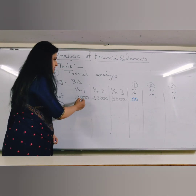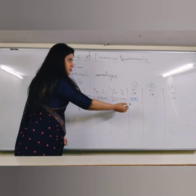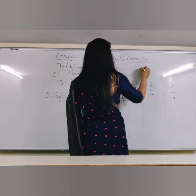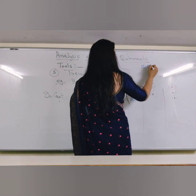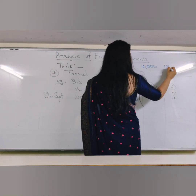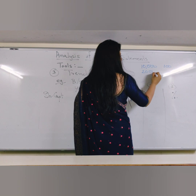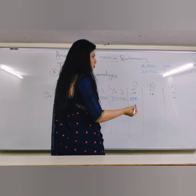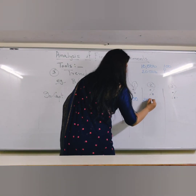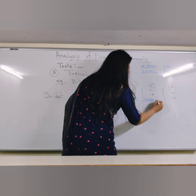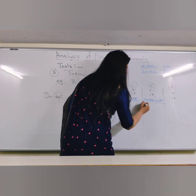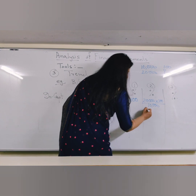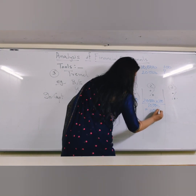Which means, if 10,000 is 100%, how much is 20,000? Simple cross multiplication: 10,000 is 100%, so 20,000 is how many percent? Just cross multiply — 20,000 multiplied by 100, divided by 10,000, which will give me 200%.